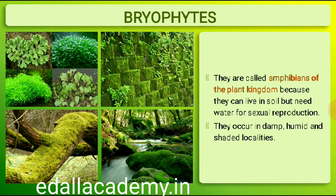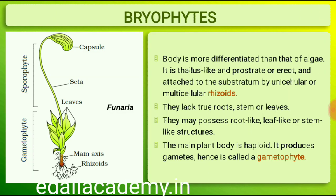Bryophytes include the various mosses and liverworts that are found commonly growing in moist, shaded areas in the hills. Bryophytes are also called amphibians of the plant kingdom because these plants can live in soil but are dependent on water for sexual reproduction. They usually occur in damp, humid and shaded localities. They play an important role in plant succession on bare rocks and soil. The plant body of bryophytes is more differentiated than that of algae; it is thallus-like and prostrate or erect, and attached to the substratum by unicellular or multicellular rhizoids.